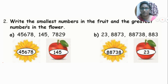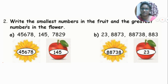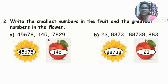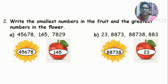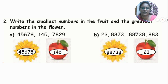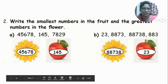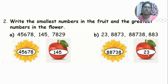Write the smallest number in the fruit and the greatest number in the flower. Given numbers: 45,678; 145; 7,829. The greatest number is 45,678 — write it in the flower. The smallest is 145 — write it in the fruit. Next set: 88,738 is the greatest — write in the flower. 23 is the smallest — write in the fruit.